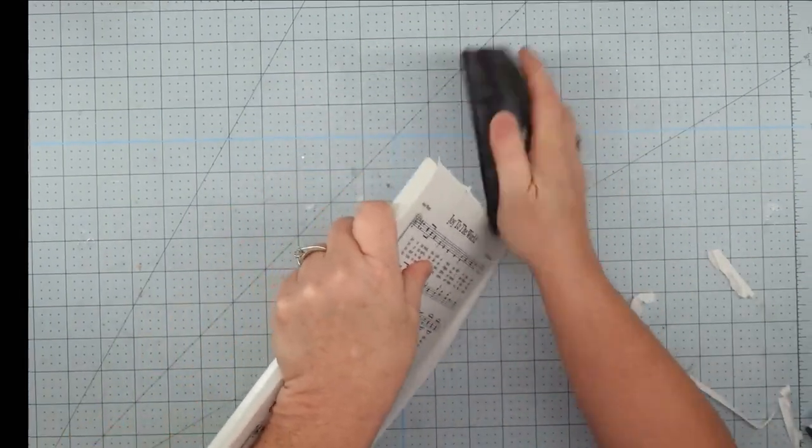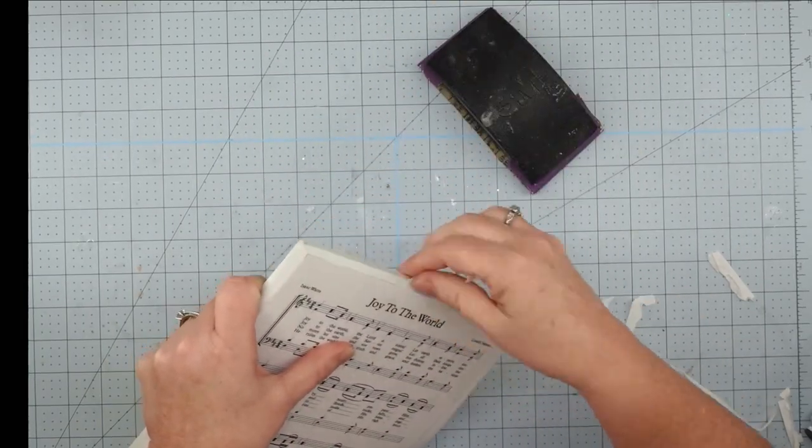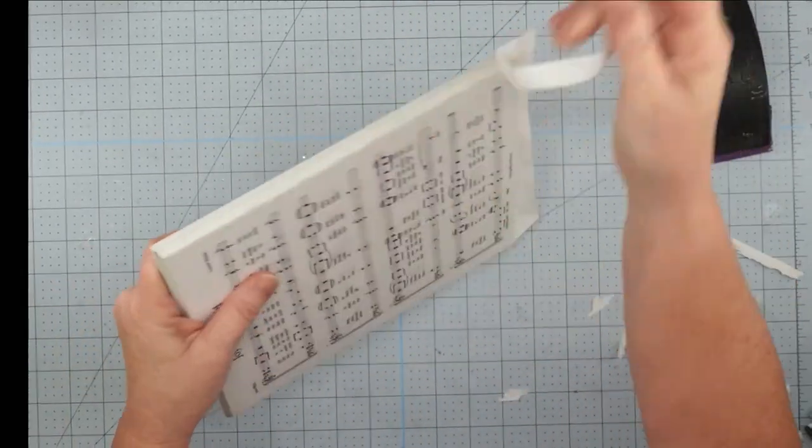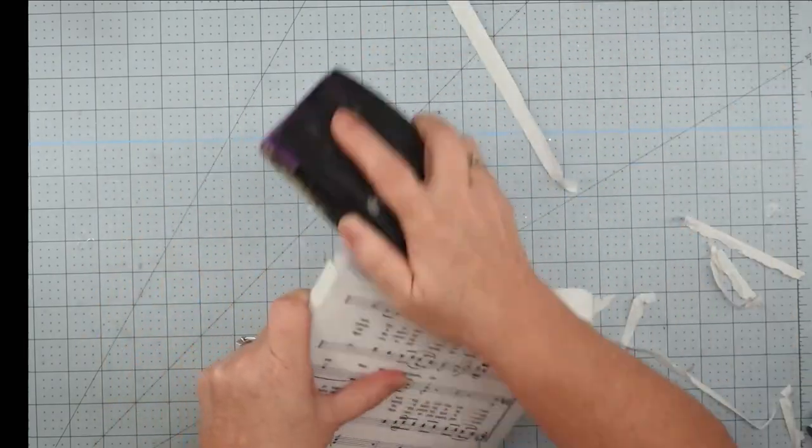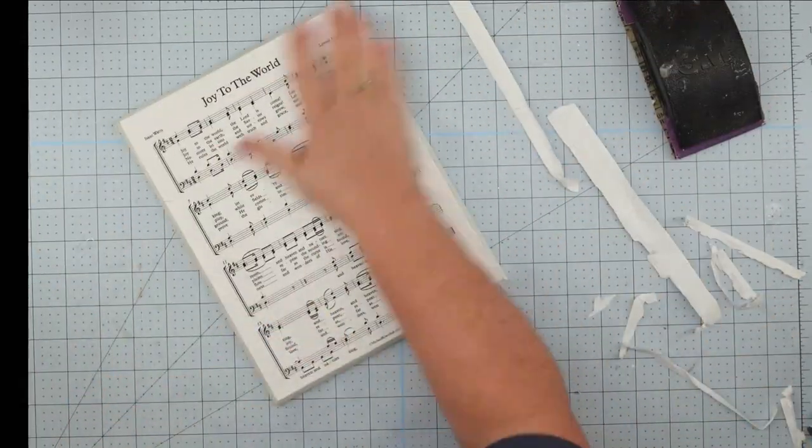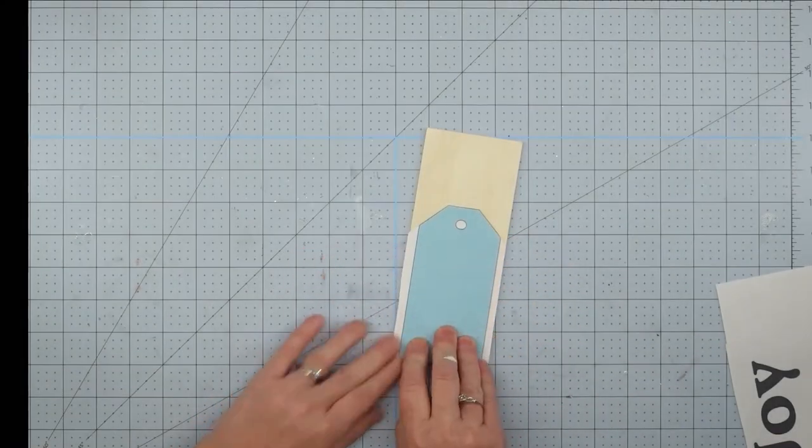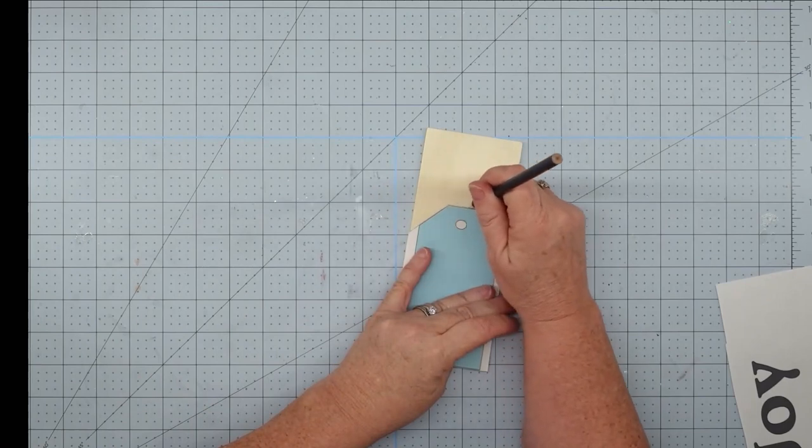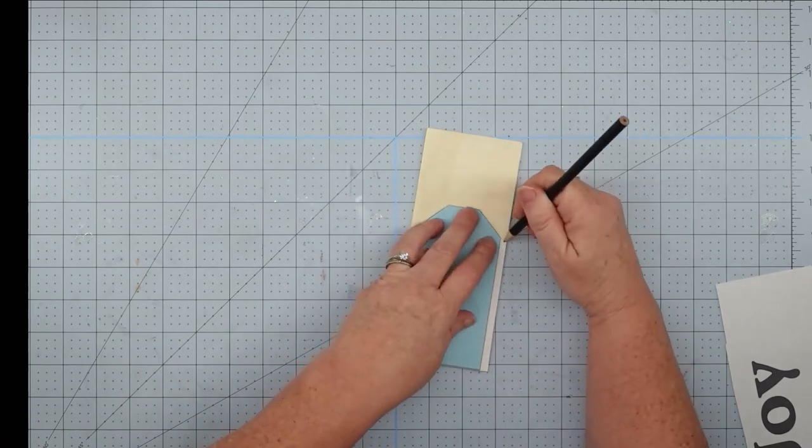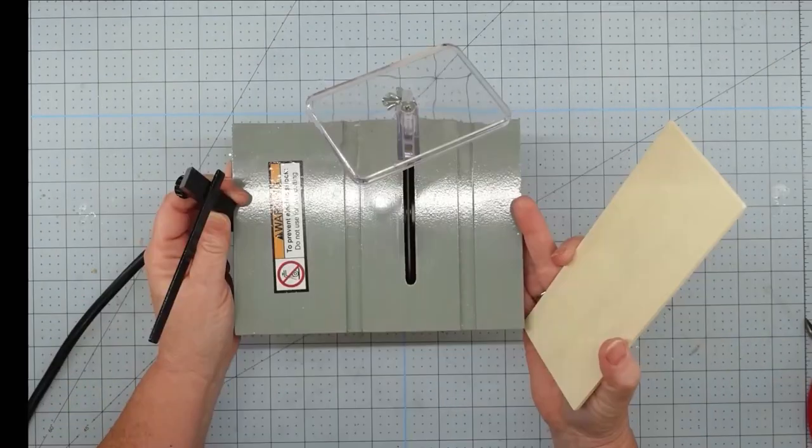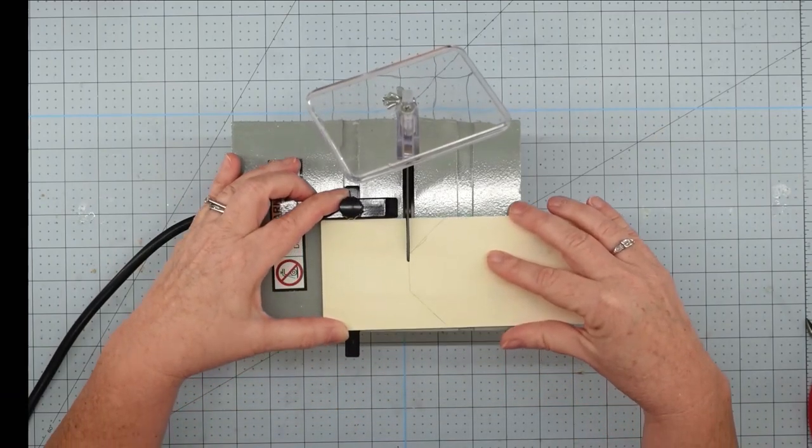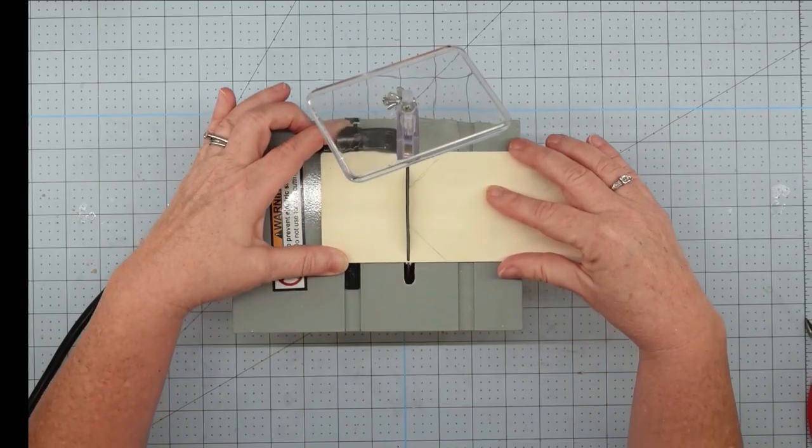Once it was dry, I'm going to take my sanding block and I just go around the edges and sand down. And this is going to take off all the excess paper and it leaves a really nice edge. Now I'm going to take one of those wooden planks that I got from the Dollar Tree and I took a template of a tag that I printed out and I'm just going to trace around the top of it. Then I'm going to use my little four inch table saw and I'm going to cut this down.